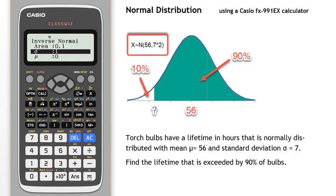Hit the equals button. Standard deviation is 7. Hit the equals button and the mean is 56.